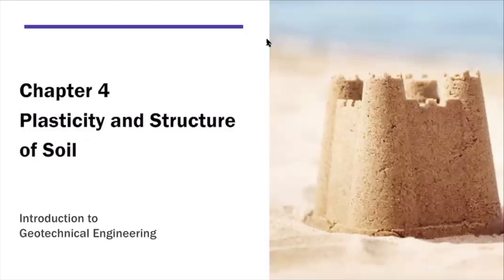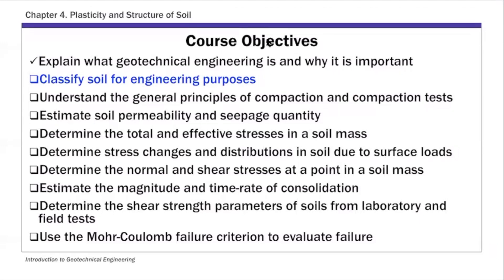As I mentioned, Chapter 4: Plasticity and Structure of Soil. This is the list of our course objectives, and I have highlighted here how this relates to our main course objectives. So plasticity and soil structure — specifically we're going to discuss index properties. In Chapter 2, we touched on this topic: grain size, grain size distribution, and grain shapes. All those are index properties of soil, and they're important for coarse-grained soils. For fine-grained soils, index properties include plasticity and Atterberg limits. All these index properties are used to classify soils for engineering purposes.